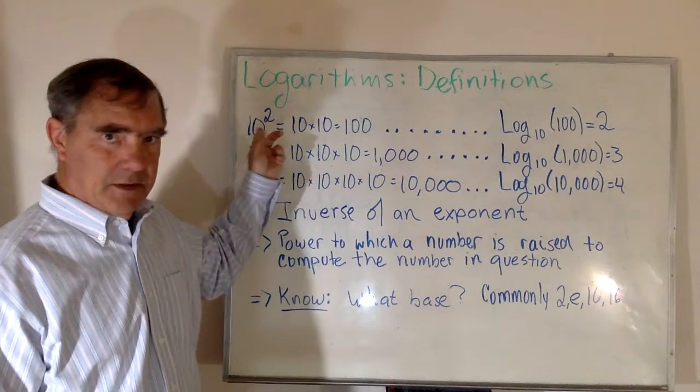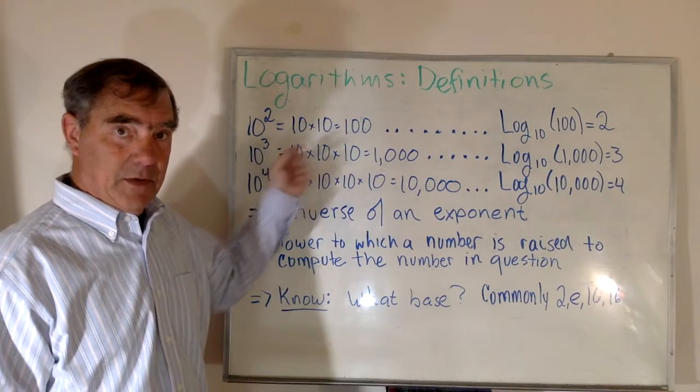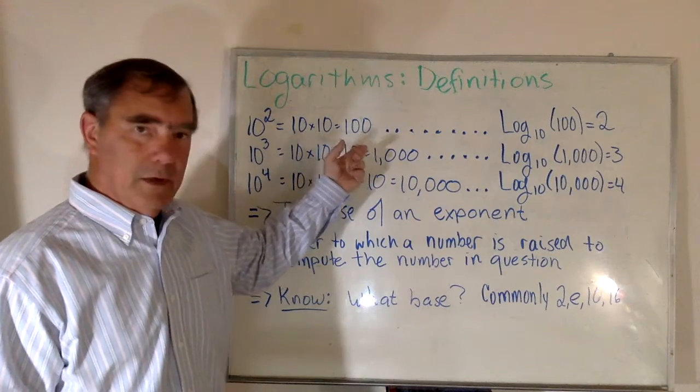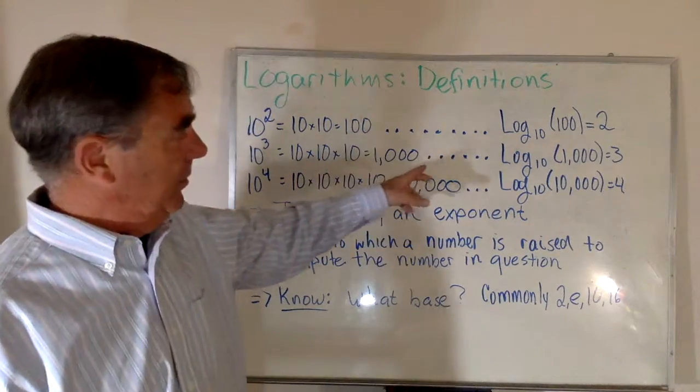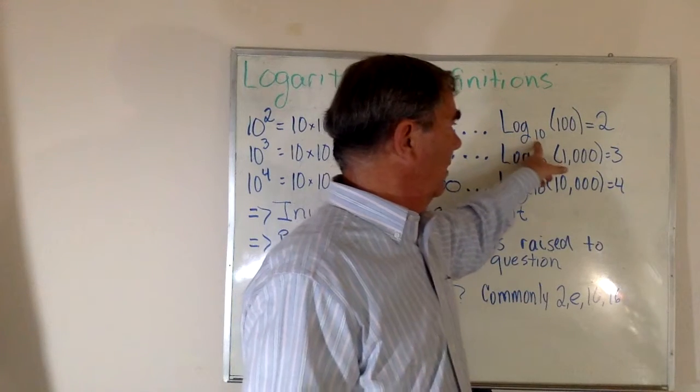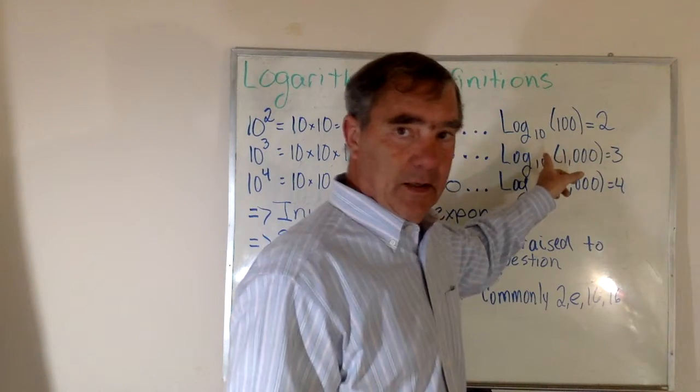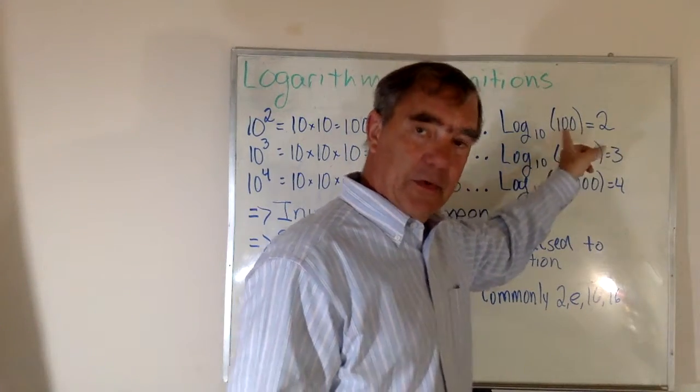First, 10 raised to the second power is 10 times itself two times, or 100. What this means is that the base 10 logarithm of 100 is 2 because 10 raised to the second power is 100.